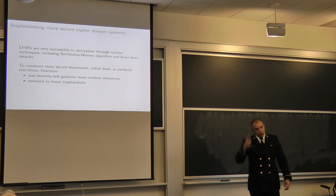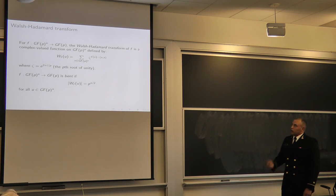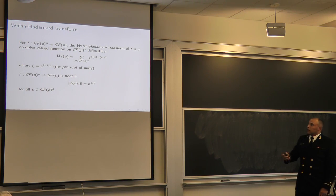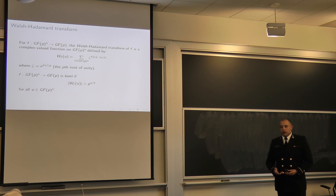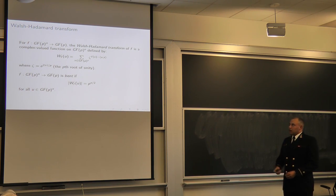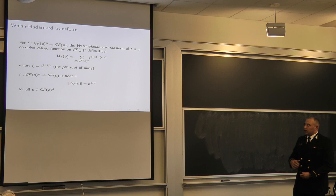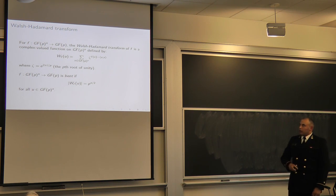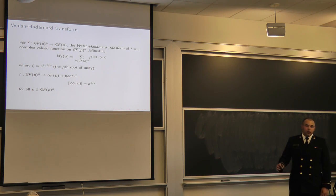Most people look at bent functions and instantly have a question mark over their head, so let's start with the definition. We start with the Walsh-Hadamard transform, which is analogous to a Fourier transform. You take the sum over all vectors in your field — in our case GF(p^n) — of the p-th root of unity raised to the power of F(x) minus the inner product of u and x, where u is the vector you're finding the transform for. A function from GF(p^n) to GF(p) is bent if your Walsh-Hadamard transform equals p to the n/2 for all vectors in your field.